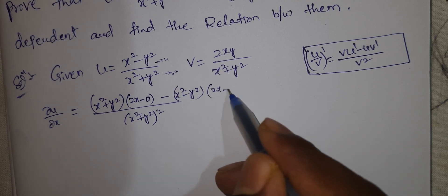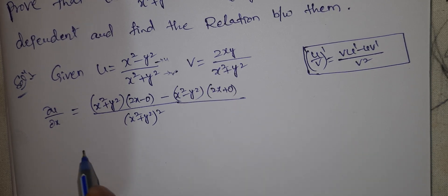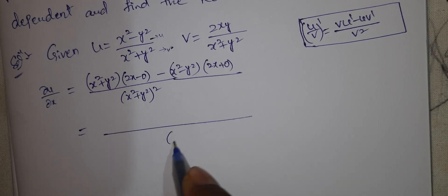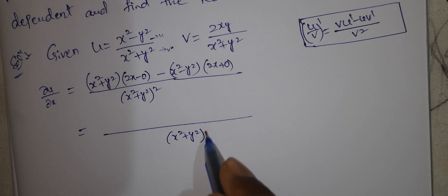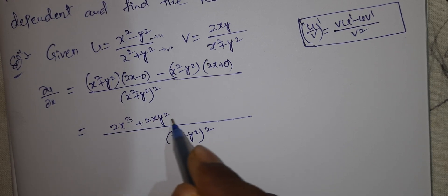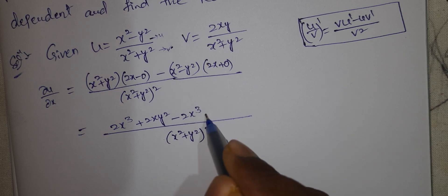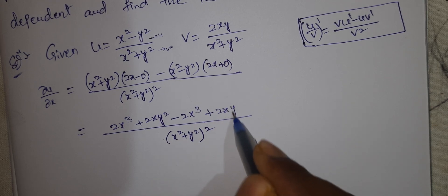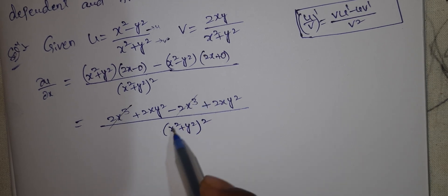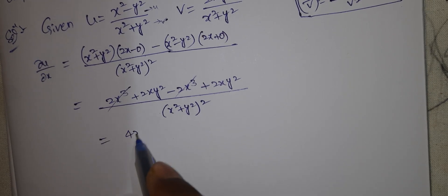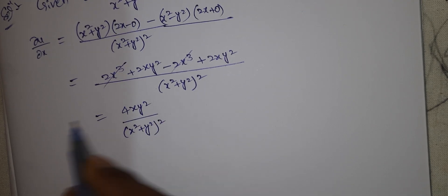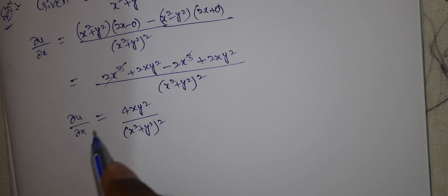The 2x³ terms cancel out, giving 4xy² / (x² + y²)². So ∂u/∂x = 4xy² / (x² + y²)².